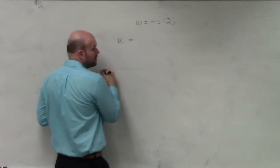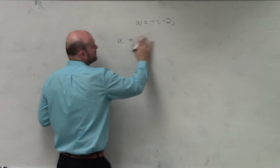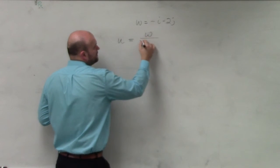So just remember, the formula for the unit vector is basically, for any vector, it's going to be w over its magnitude.